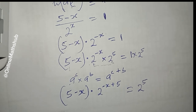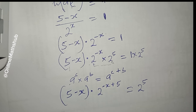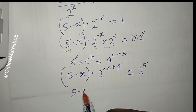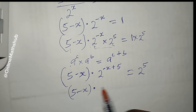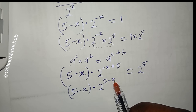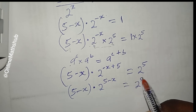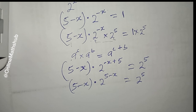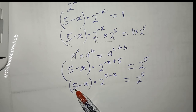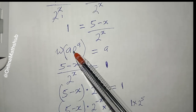Now rewriting −x + 5 as 5 − x, we get (5 − x) · 2^(5 − x) = 2^5. You can see we've achieved the structure where the same expression, 5 − x, appears both as the coefficient and as the exponent's base expression.